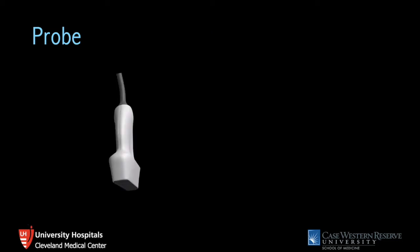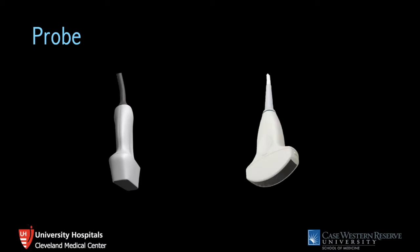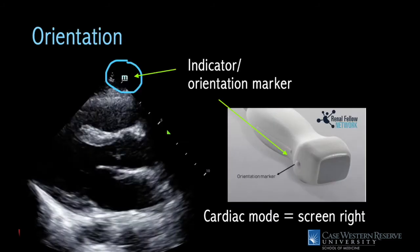For probe selection, the phased array probe, or cardiac probe, is probably your best probe, though you can use the curvilinear probe. Because of the larger size, it can be difficult to fit between the rib spaces. For probe orientation, this generally depends on your preset and machine settings. Most point-of-care ultrasound applications have the indicator on the left side of the screen, while cardiologists more commonly use cardiac mode with the indicator on the right. For this talk, I'll be discussing things based on cardiac mode with the indicator on the right side of the screen. If your institution keeps the indicator on the left, you'll need to rotate your probe 180 degrees to get the same images.